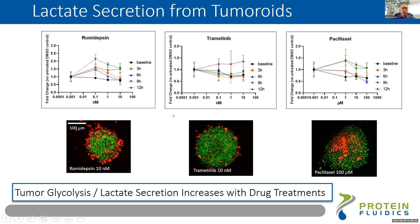Here's some data from tumoroids. We're looking at the response of individual tumoroids over different time points to different concentrations of these compounds. The pictures at the bottom show the endpoint viability staining of those representative tumoroids. At the end, we still have live tumoroids — this is a 12-hour treatment and the concentrations weren't high enough to kill them — but you can definitely see effects on metabolism. For example, paclitaxel at the 9- and 12-hour periods shows a definite increase in lactate production, potentially as the cells are trying to respond to the drug compound.